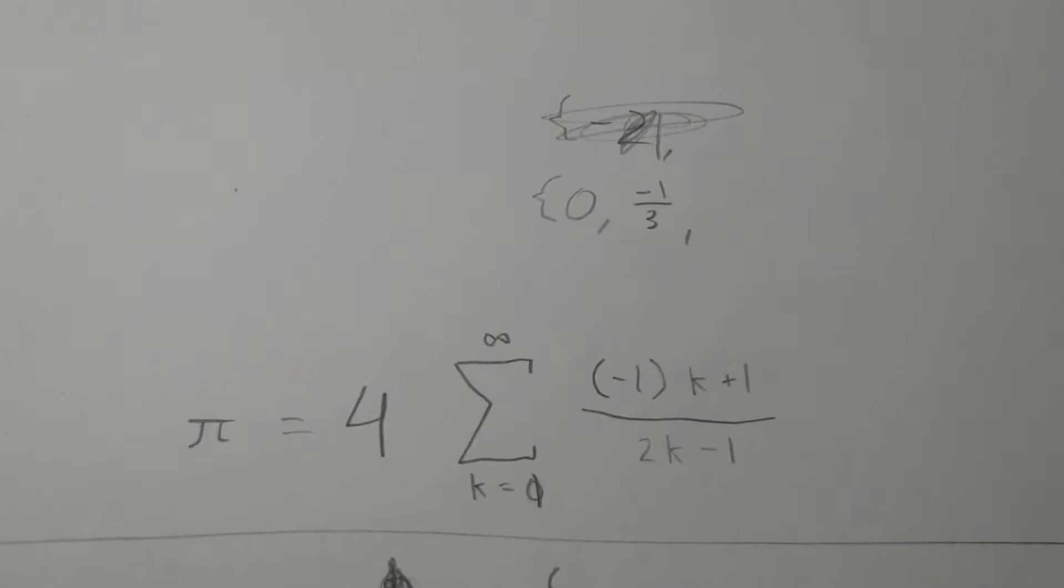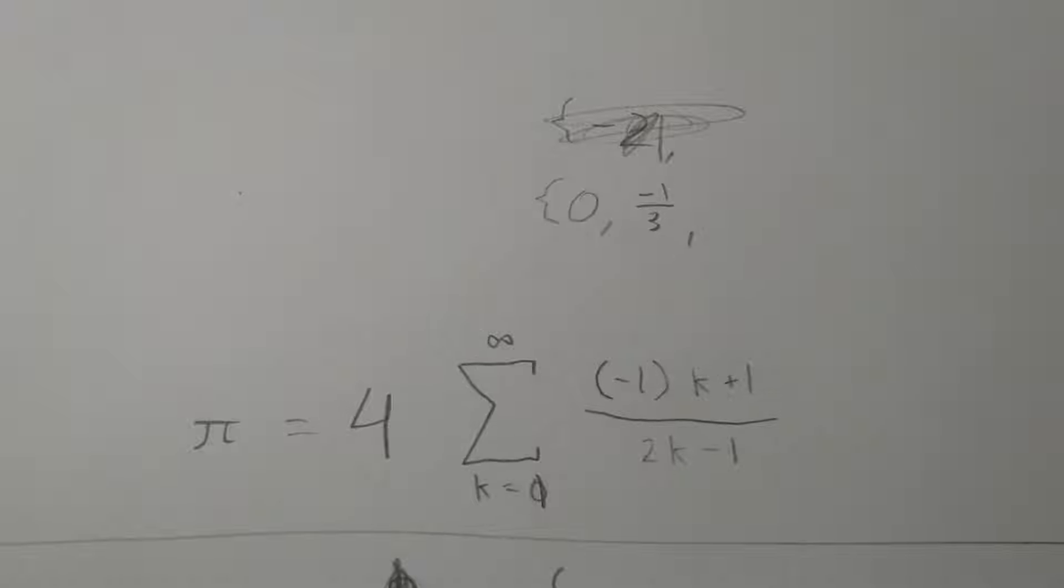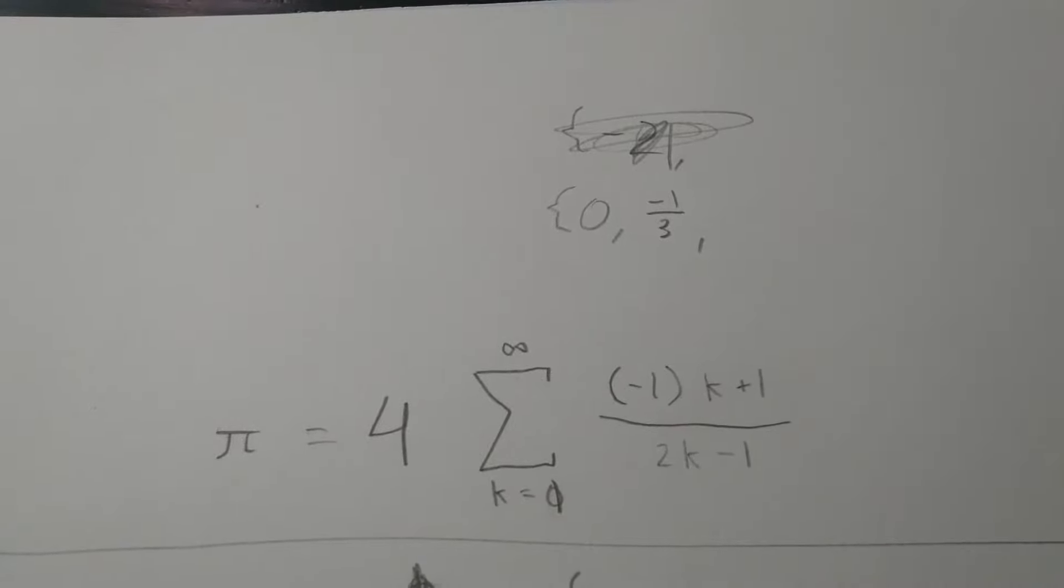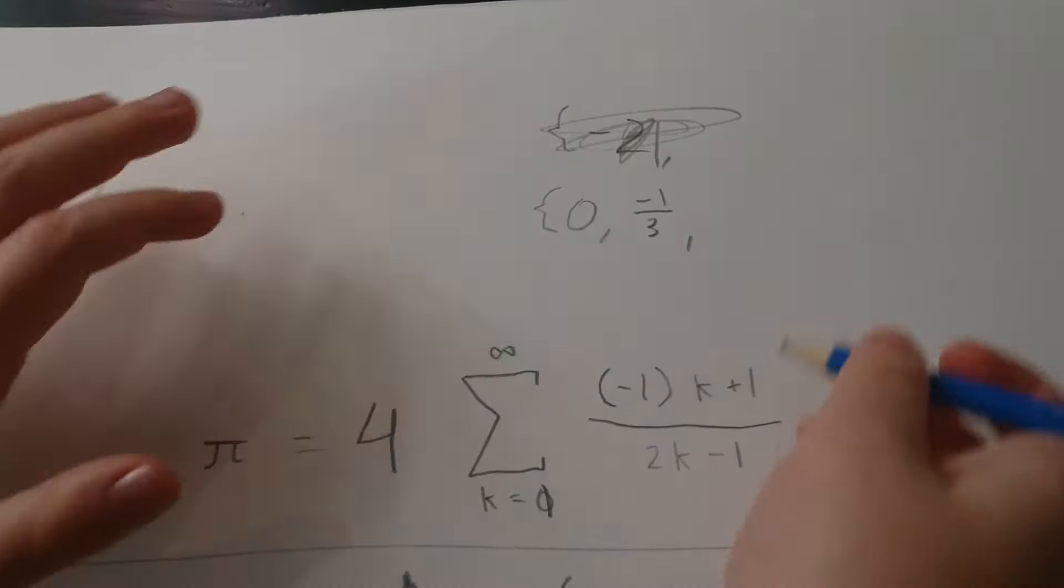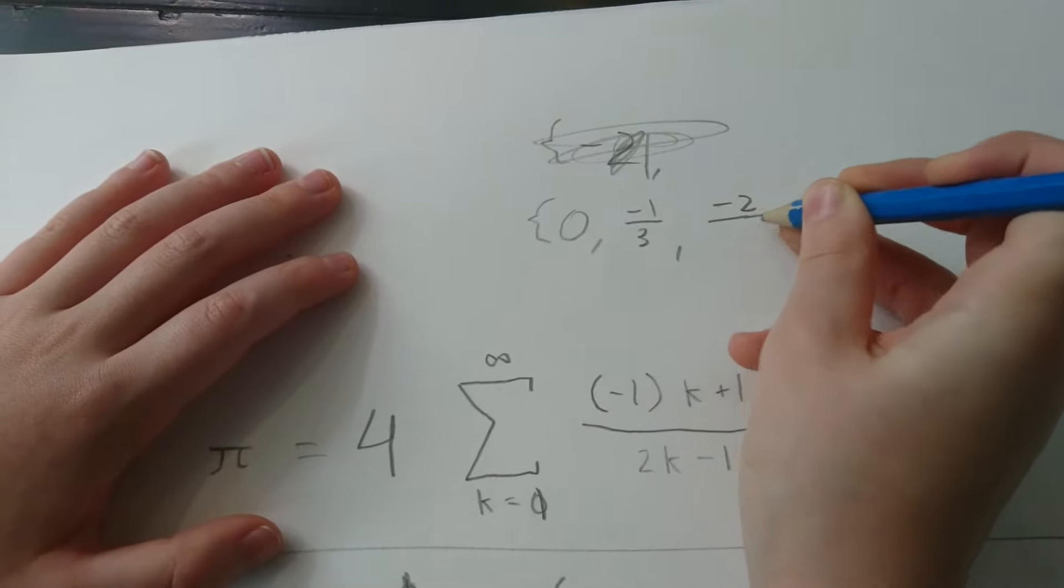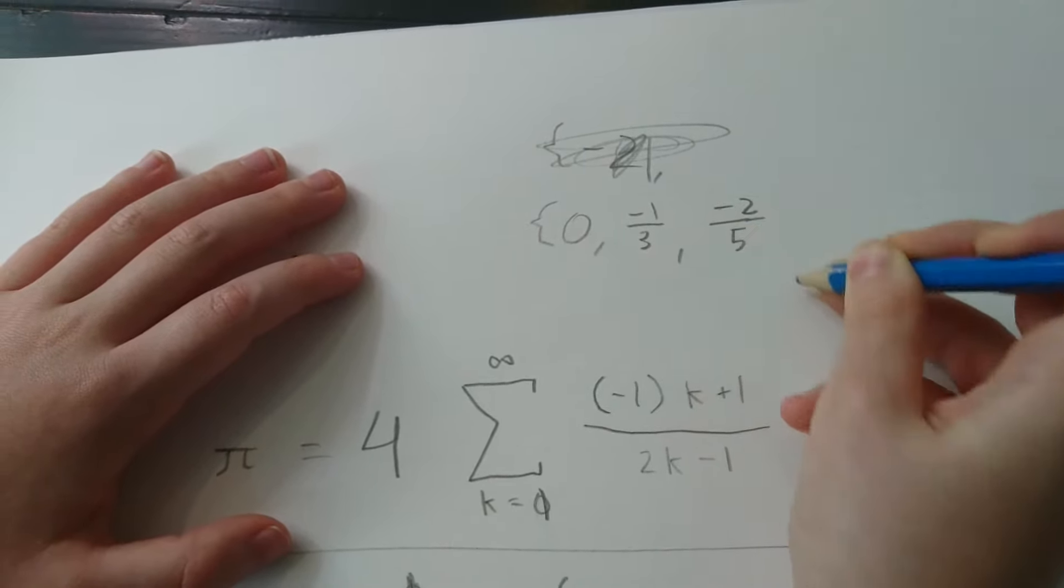And then two k minus one is, well that's six minus one, which is five, right? So negative two-fifths is the next one.